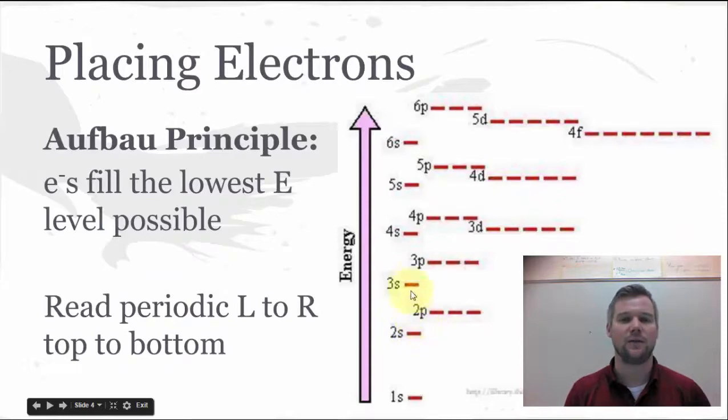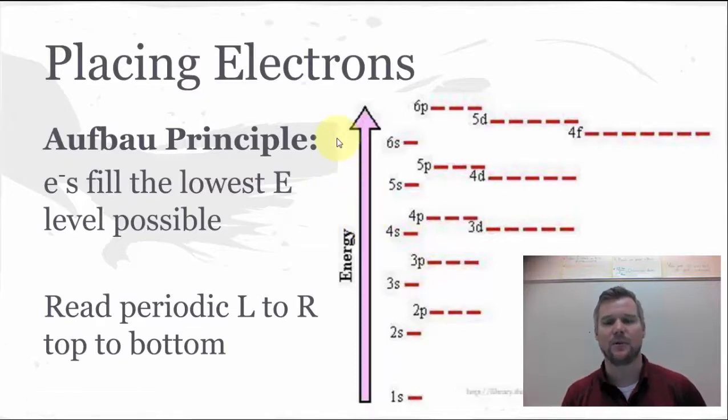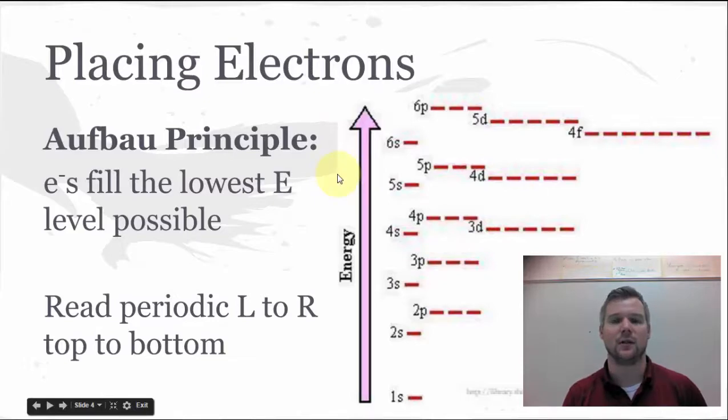When we do an electron configuration, there's a couple rules we need to follow. The first one that's going to be most important to us is called the Aufbau principle. Now the Aufbau principle says that you cannot put an electron in a higher energy level if there's a lower energy level available. That would be the ground state energy level of a given electron. This sounds kind of complicated, and this diagram makes it look a little bit more complicated than what it is. You're just going to read your periodic table from the left to right, top to bottom, like you read a book.